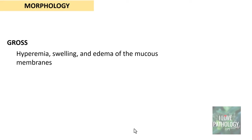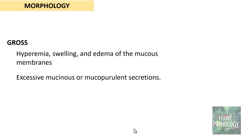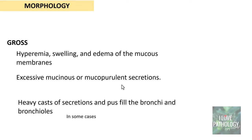Regarding the morphology of chronic bronchitis: grossly there is hyperemia, swelling, and edema of the mucous membranes, with excessive mucinous or mucopurulent secretions — purulent if infected. In some cases you can find heavy casts of secretions, and that secretion and pus may fill the bronchi and bronchioles.